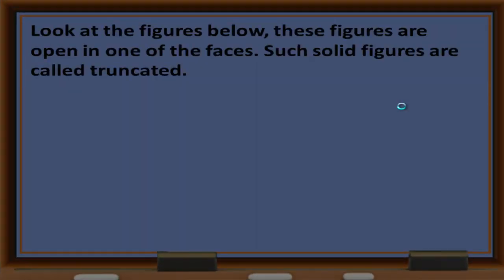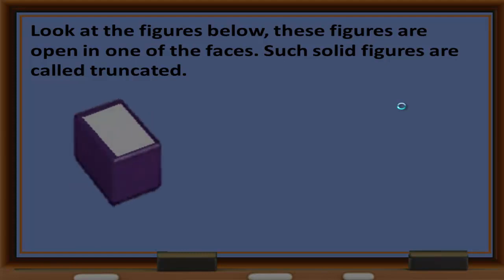Look at the figures below. These figures are open in one of the faces. Such solid figures are called truncated. This solid figure is open in the upper part. The lateral is closed but the upper is open, therefore it is truncated.